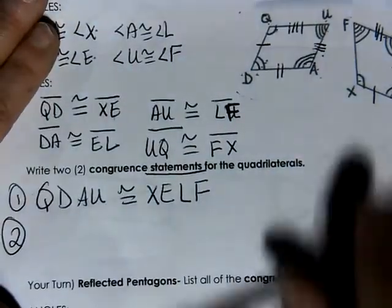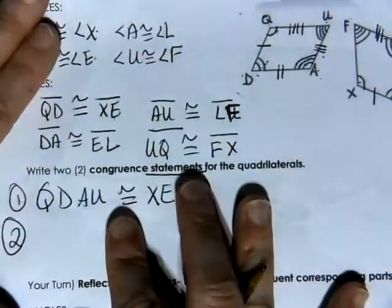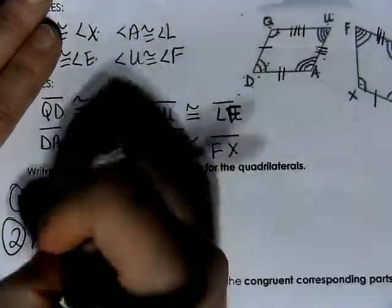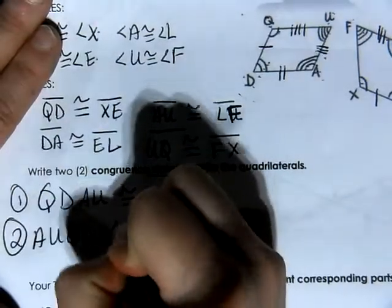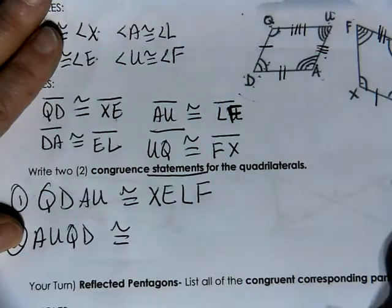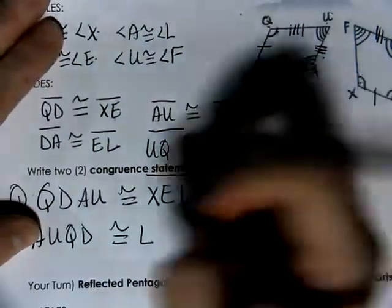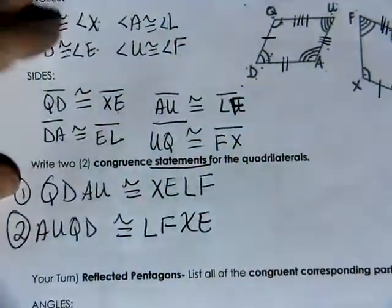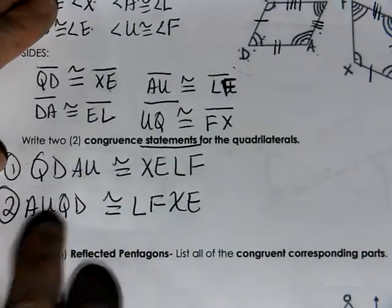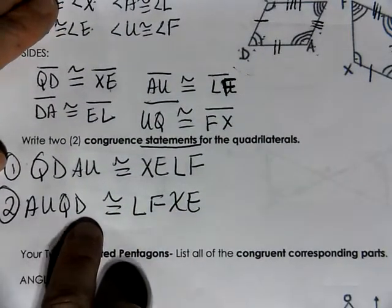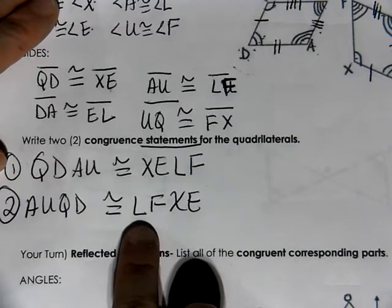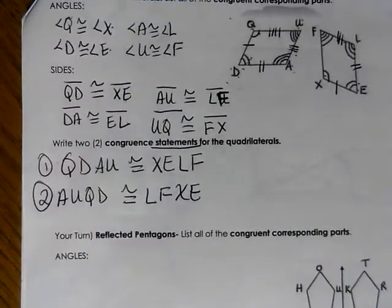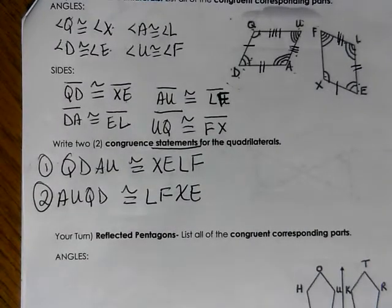You can start at any location you want. Let's say you want to start at A and go A, U, Q, D — that's congruent to L, F, X, E since A matches with L, U matches with F, Q matches with X, and D matches with E. So quadrilateral AUQD is congruent to quadrilateral LFXE. There can be many valid congruent statements.